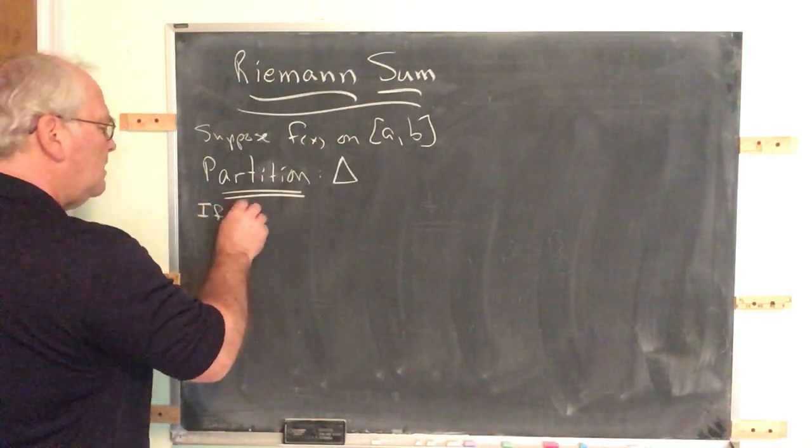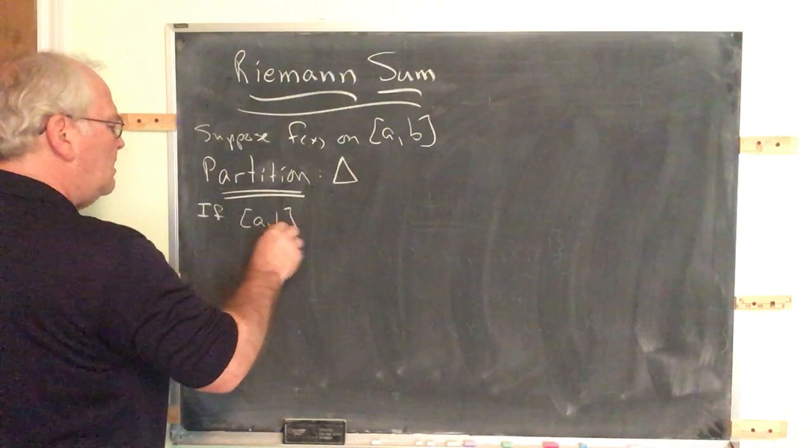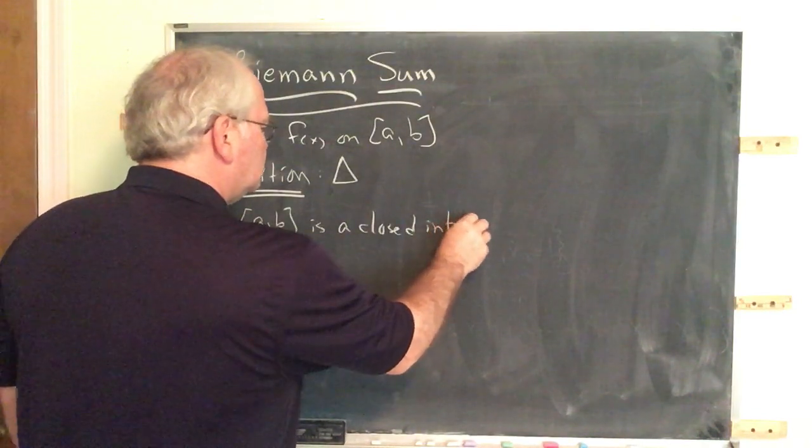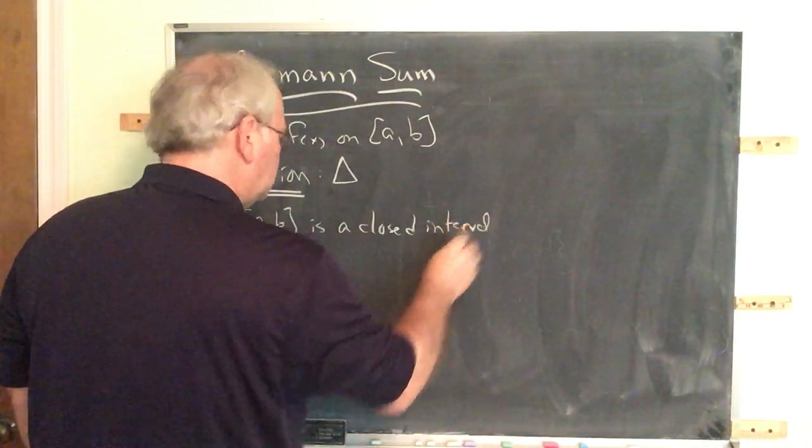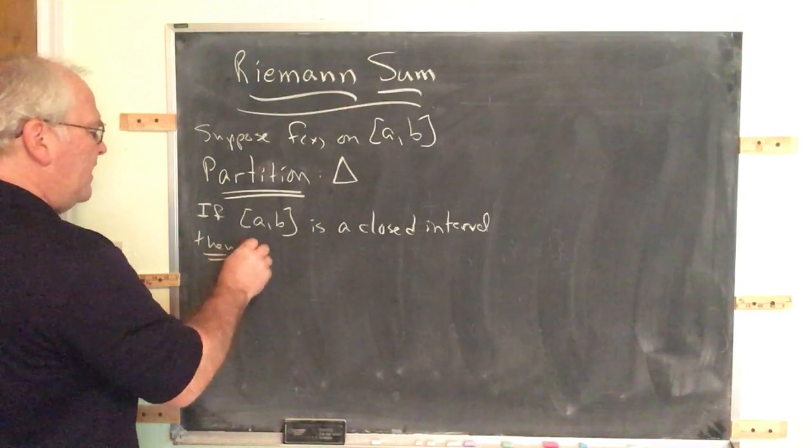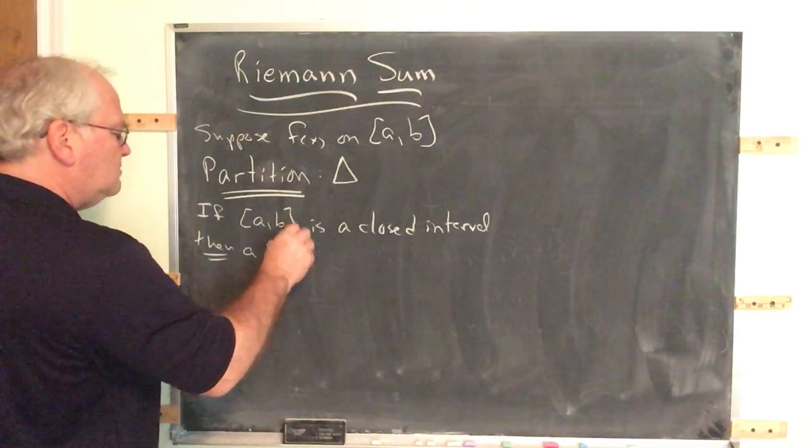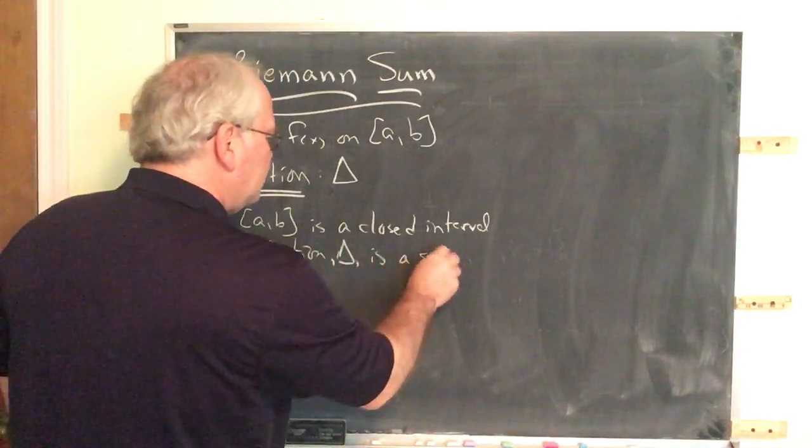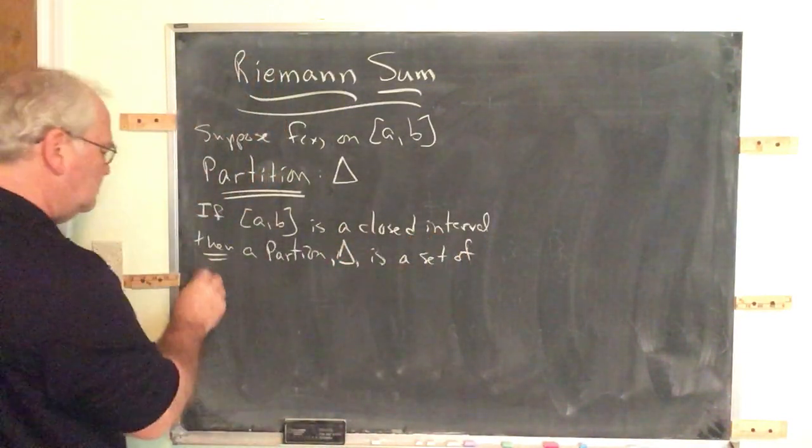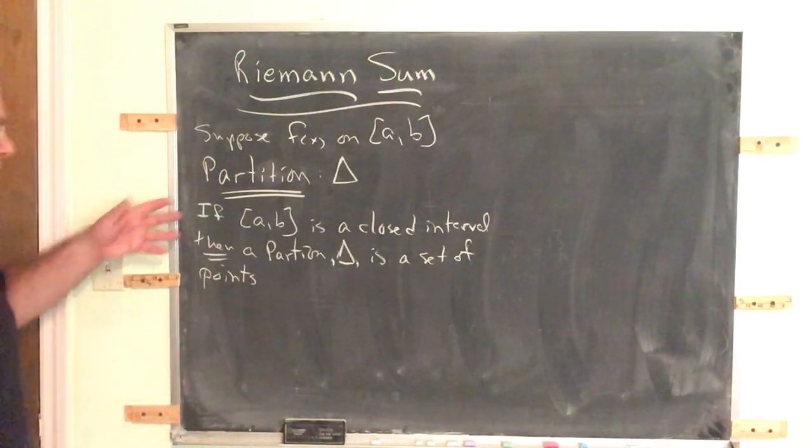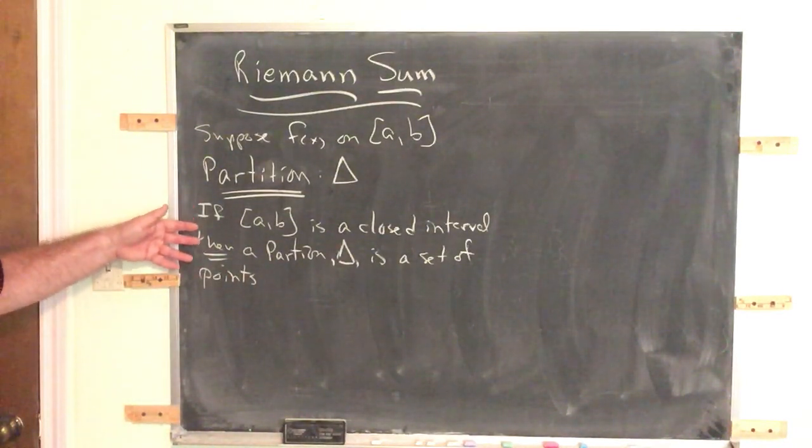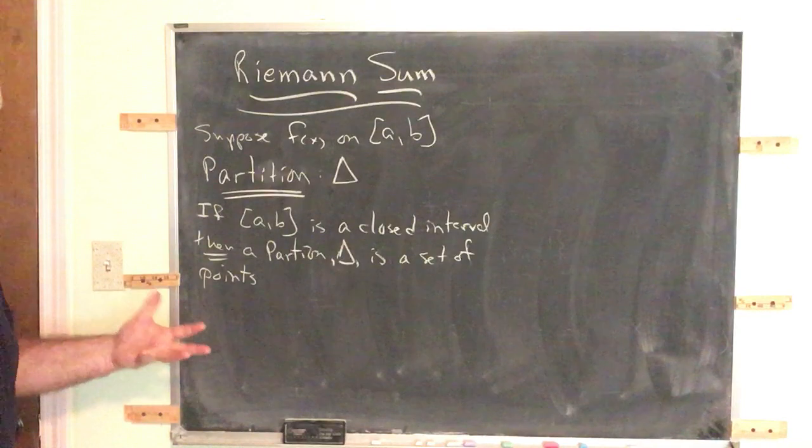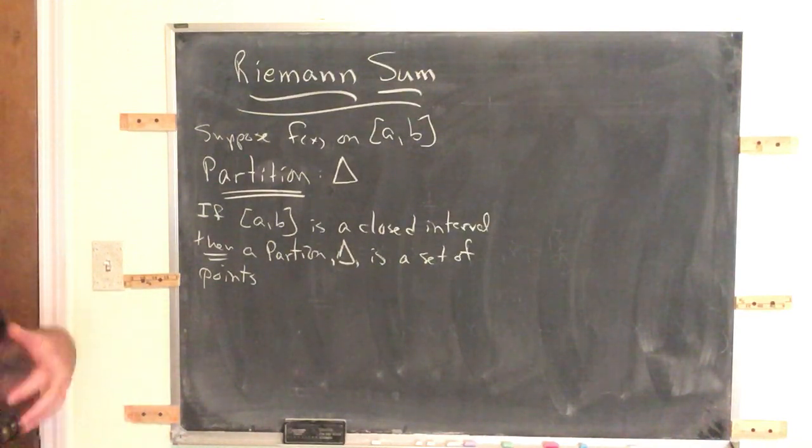If [A, B] is a closed interval, then a partition delta is a set of points. A partition really in its basic form is simply a set of points. There are some requirements.